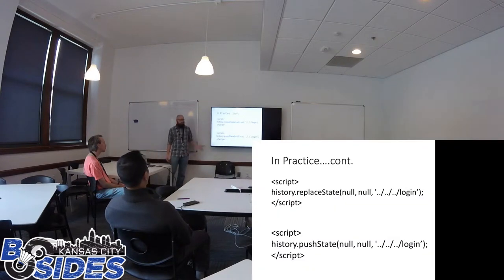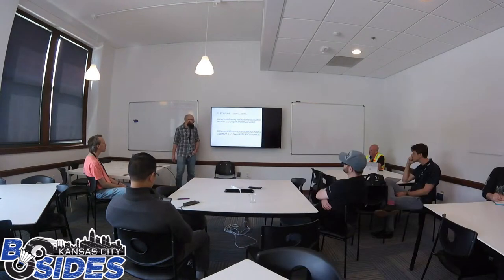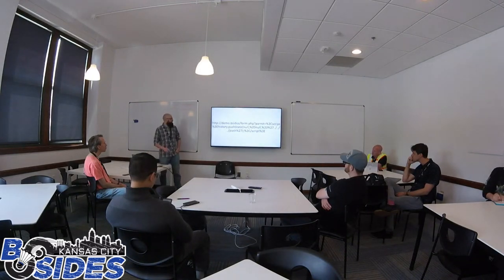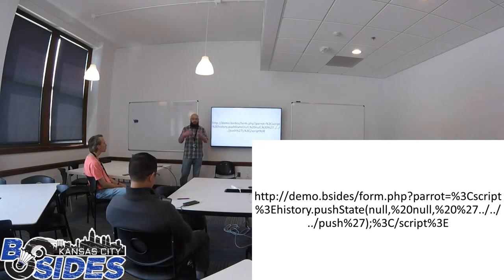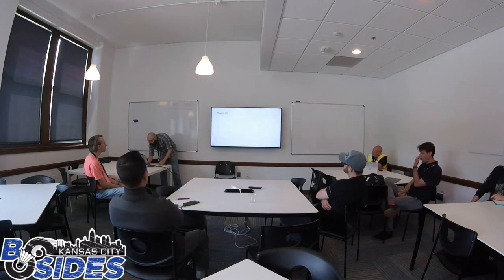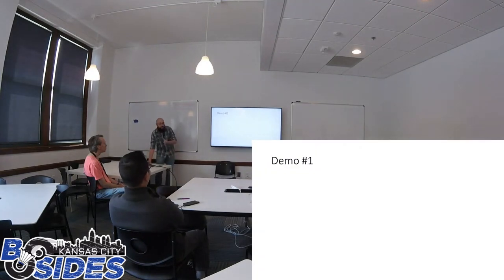Obfuscate it a little bit — really just URL encoding it, not even entirely, just makes it look a little more realistic. So we've got a demo website: demo.vsides, and then form.php which is just a simple PHP form page. The 'parrots' parameter is basically just a value — you feed it a parameter, it parrots it back out. Then you dump your script in there. Unlike some demos I've seen where they made it fancy, we're going to try a live demo. If not, I do have videos.